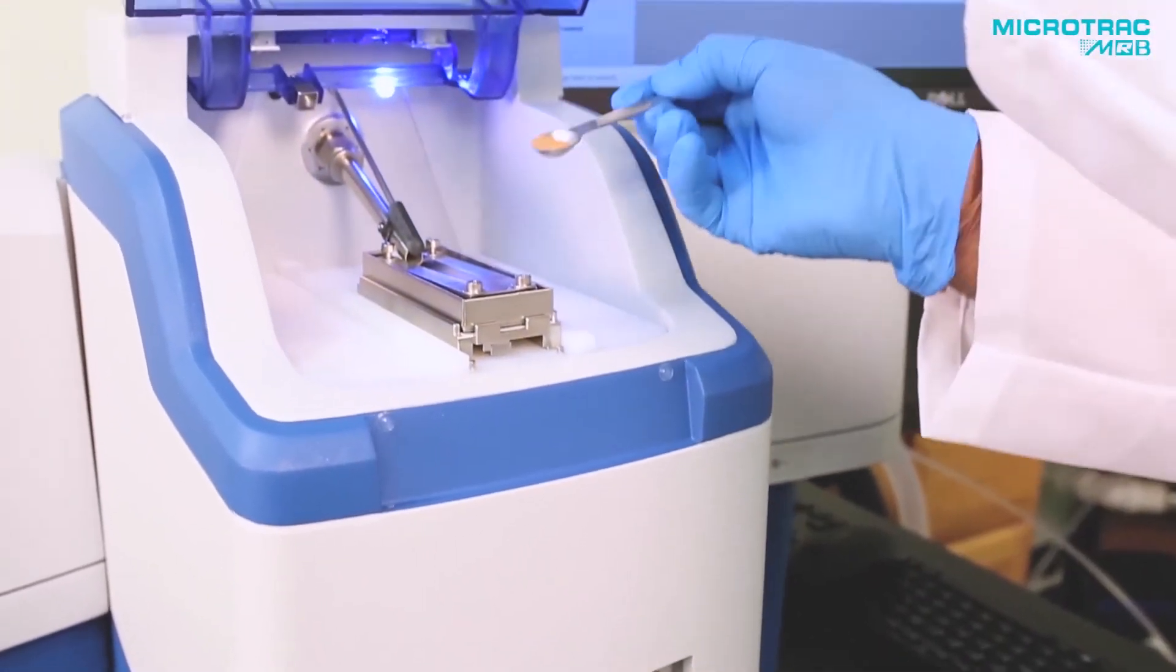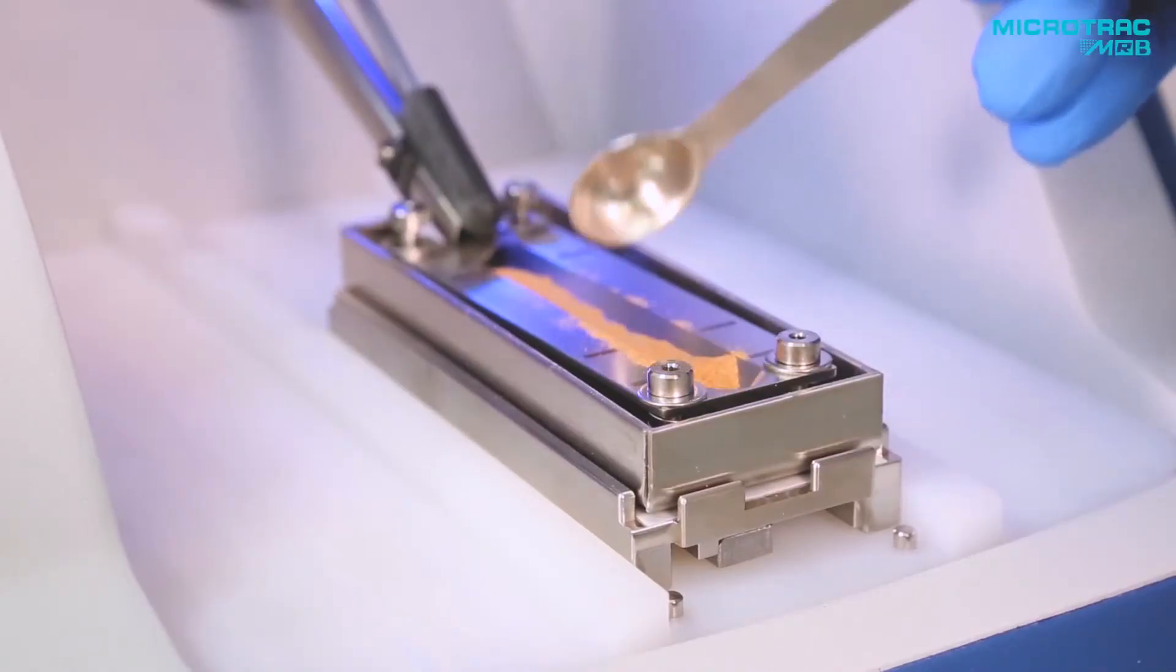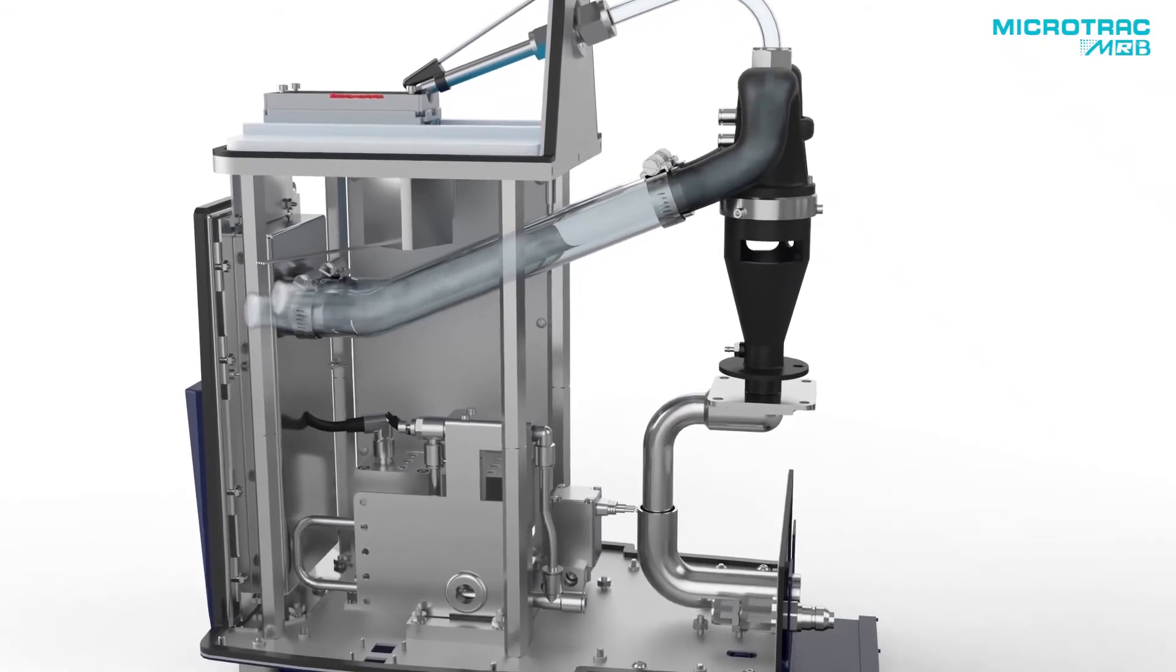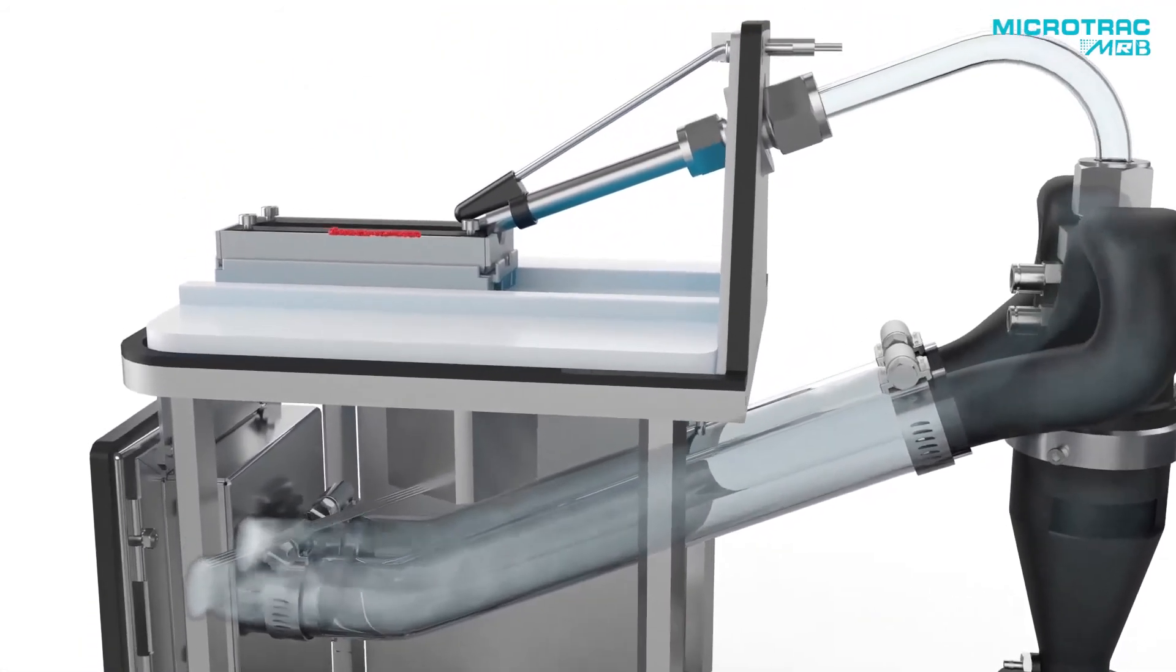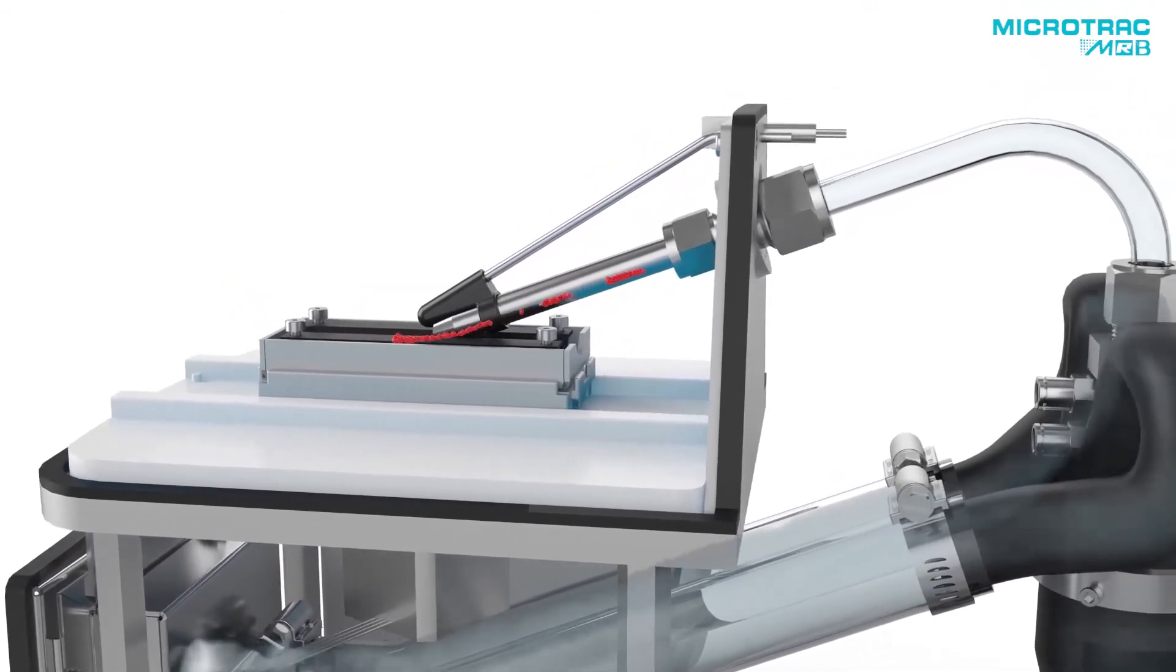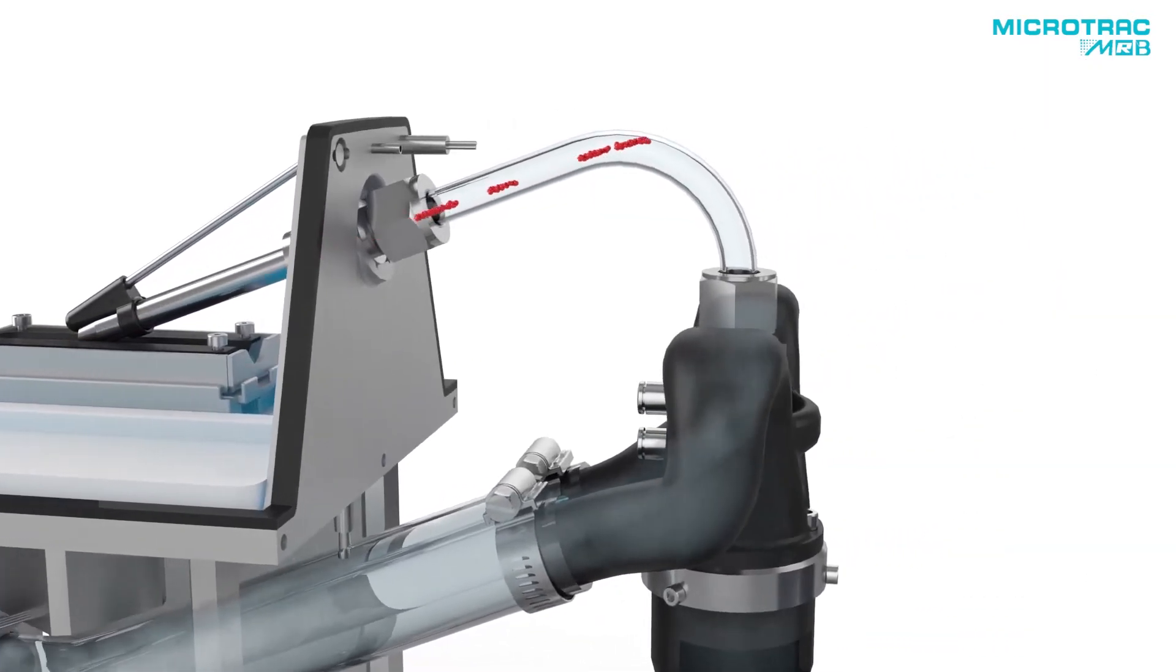Sample is placed on the tray and aspirated to the adductor. The adductor design directs compressed air through integrated turbo jets, ensuring that the material is fully dispersed before being introduced to the sample cell.